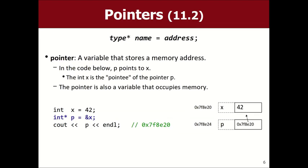You can make something called a pointer — a variable that stores a memory address. That's what a pointer is. Usually when you declare a pointer, you say this pointer points at a value of a certain type. The way you declare one: 'int* p = &x' — you might read that as 'int pointer p stores the address of x.' Now p is a variable whose value is a memory address — specifically the address where x is located.